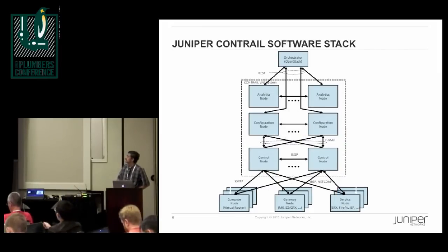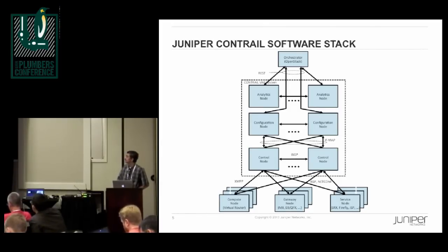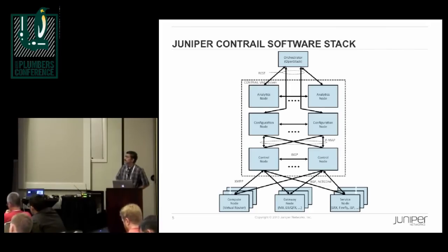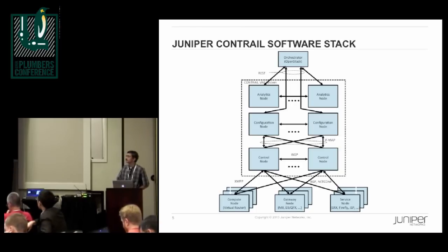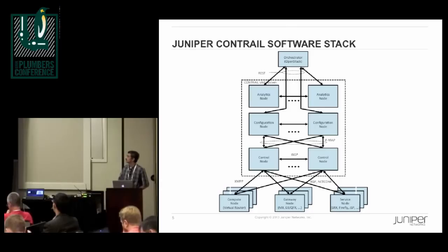In terms of components: the orchestrator talks to the configuration node, and there can be multiple configuration nodes. The configuration nodes generate config consumed by the control nodes, and we can have a federation of control nodes talking to each other using IBGP. The control nodes talk to the data-plane elements — the kernel module inside the compute nodes — using XMPP. The control node also talks to the service nodes and to the gateway node using BGP and Netconf in the future. We also have an analytics engine which allows for monitoring traffic, debugging, troubleshooting problems, looking at traffic trends and top talkers, which we won't focus on in this presentation.